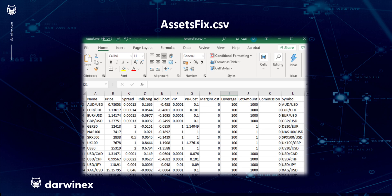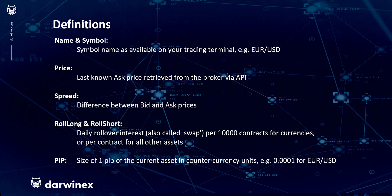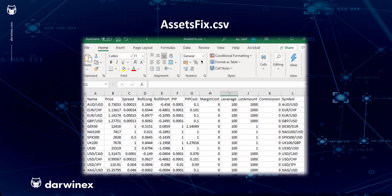We'll go through these definitions to understand exactly what we need to set up in the assetsfix.csv file, and then we'll do a demonstration of how to retrieve these parameters from DarwinX directly into your assetsfix.csv file. If anything is missing, we'll show where to go on the DarwinX website to get that information and populate the rest of your file. This effort goes a long way — if you set it up correctly at the beginning, the only things you'll likely need to change going forward are roll long and roll short, as swap rates tend to change over time.